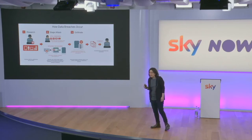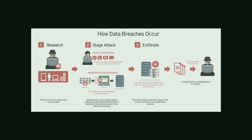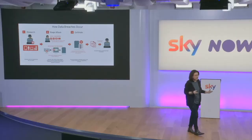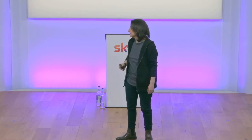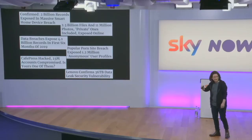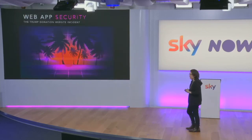So how do data breaches occur? Usually a researcher or attacker will try to perform social engineering or look for weaknesses in your infrastructure or application. Once they have an entry point, they'll try to exfiltrate the data and dump it — on the dark web or anywhere they can resell it, because data is how they make money.